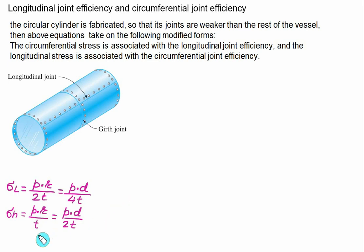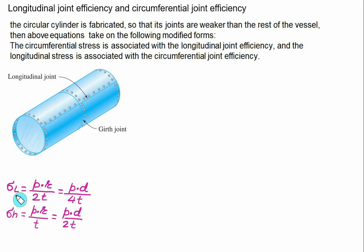In the last video, we defined the hoop stress and the longitudinal stress. The hoop stress is given as the internal pressure P times internal radius R divided by the wall thickness T, and the longitudinal stress is exactly half of the hoop stress, equal to internal pressure P times internal radius R divided by two times the wall thickness.